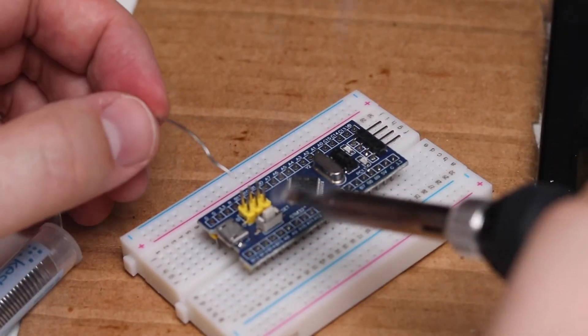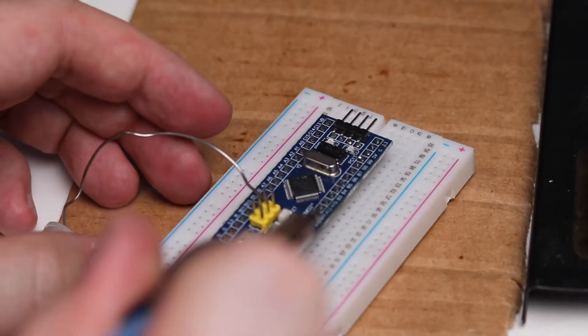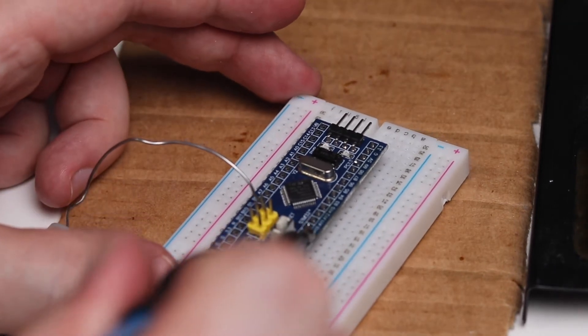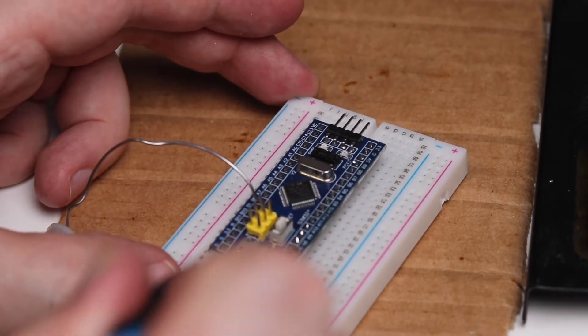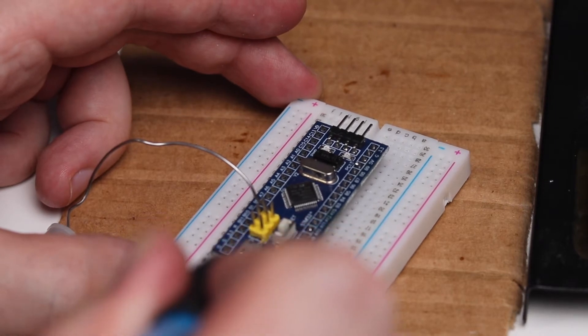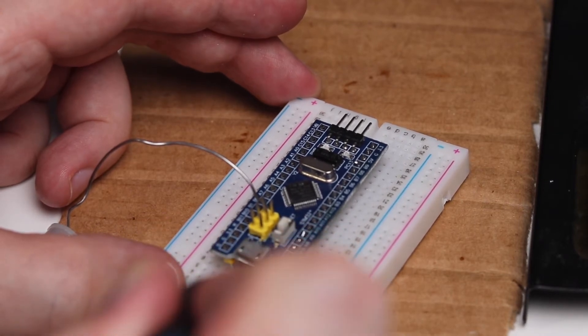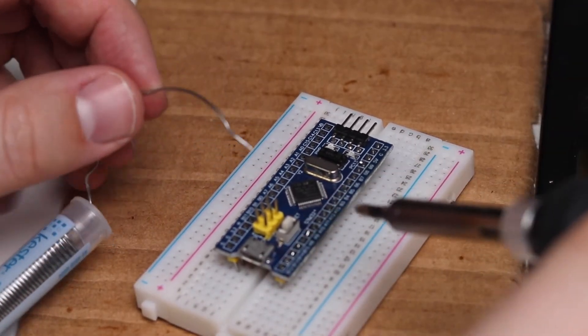It looks like I've got way too much solder on my iron but it's not coming off onto the board. Let me just try going sideways here a little bit. Okay, now some of it's coming off onto the board.